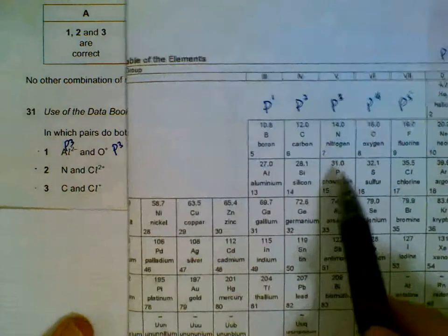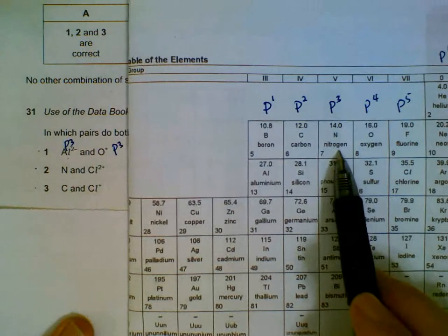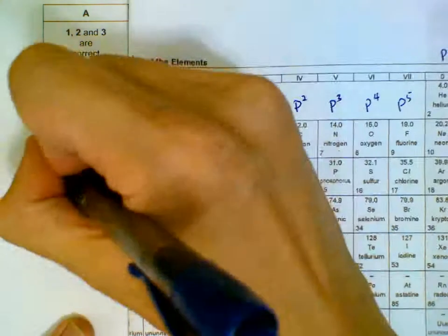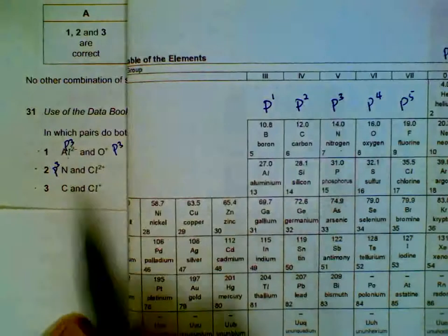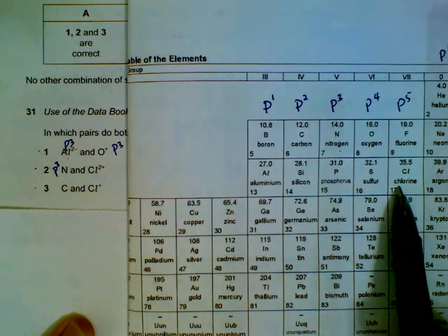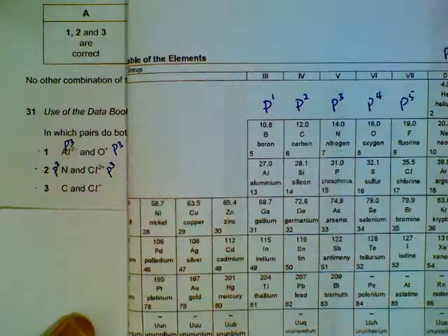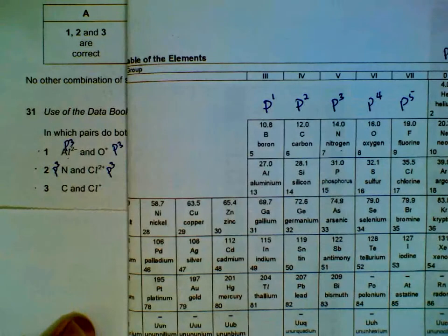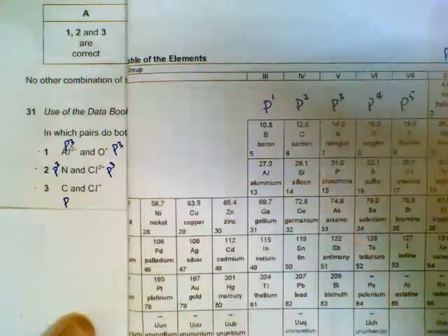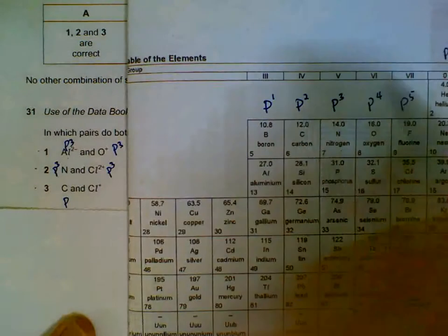We try N: nitrogen neutral is p³. Cl²⁺: Cl starts off as p⁵, two plus loses two electrons, one, two, so it will be p³. Carbon alone will be p².